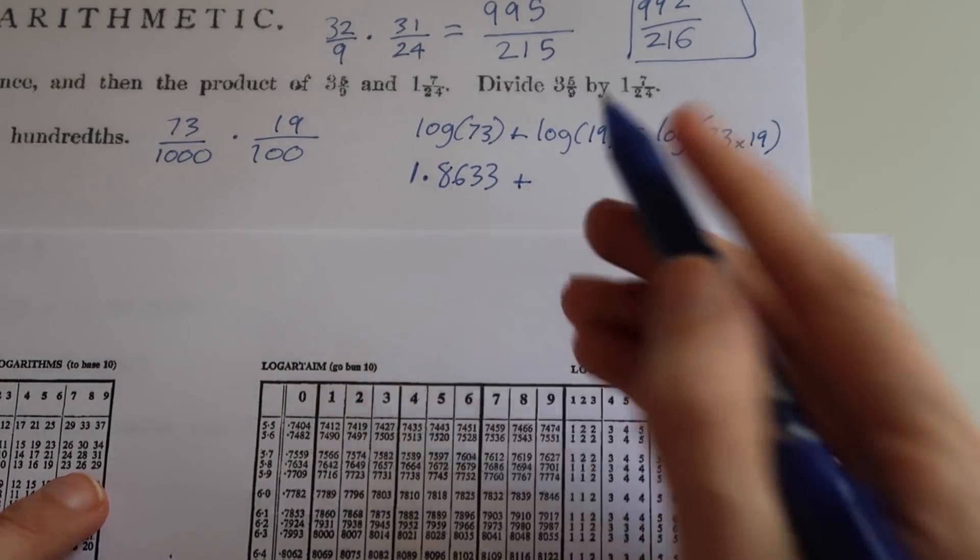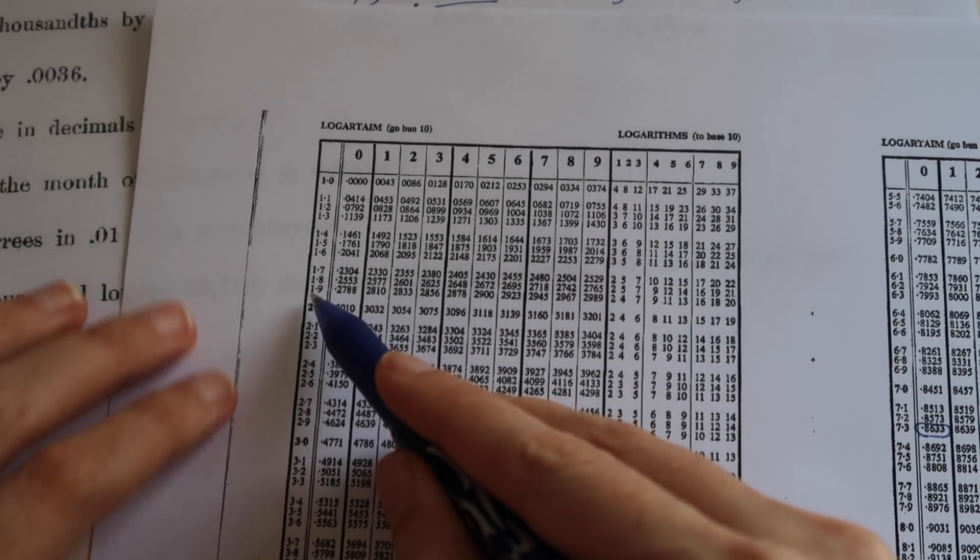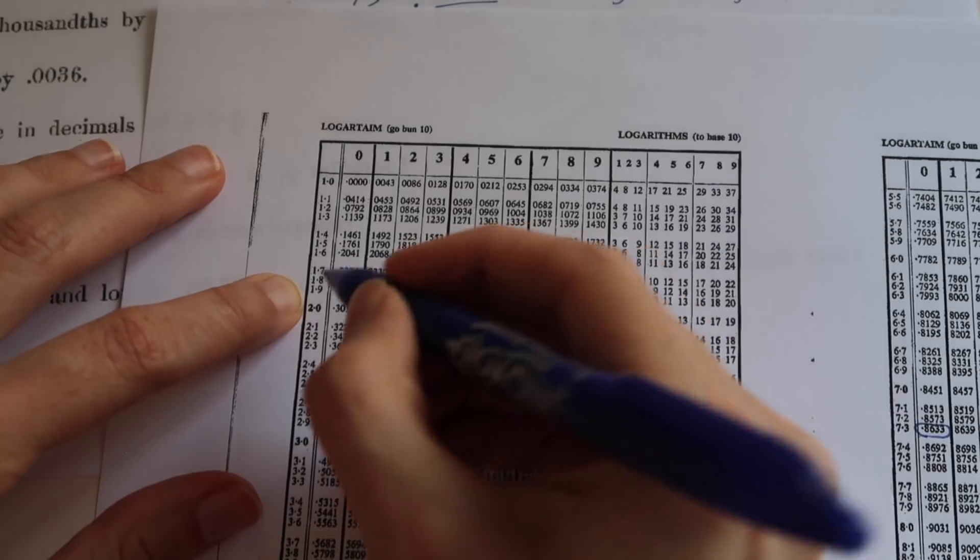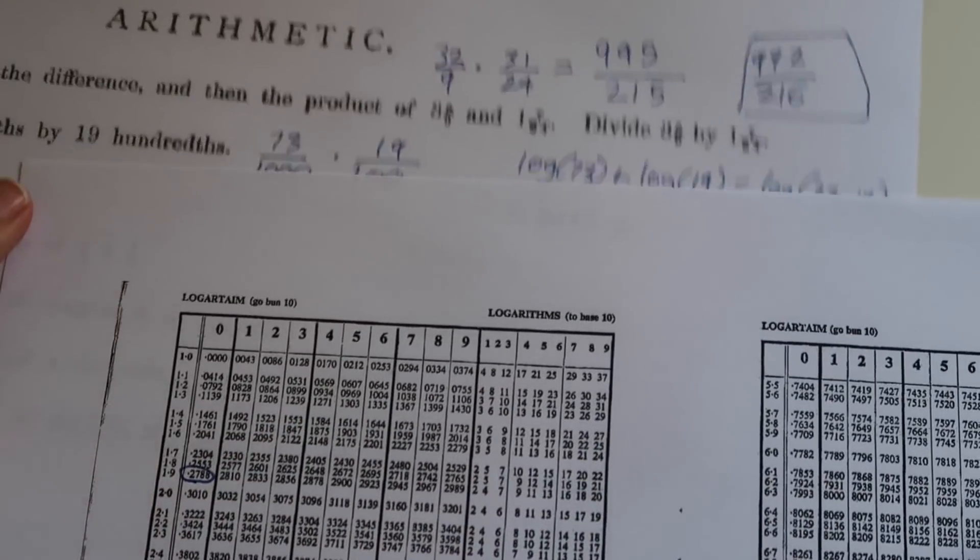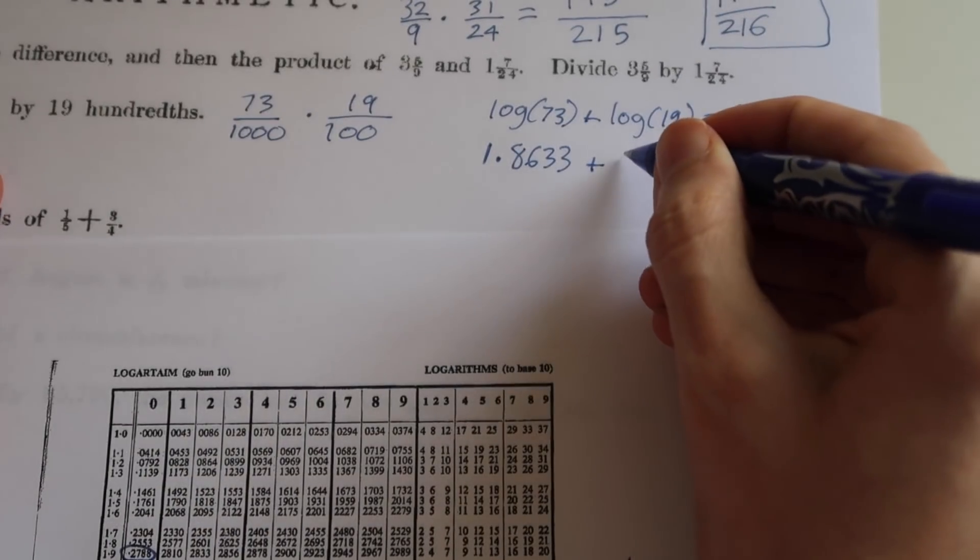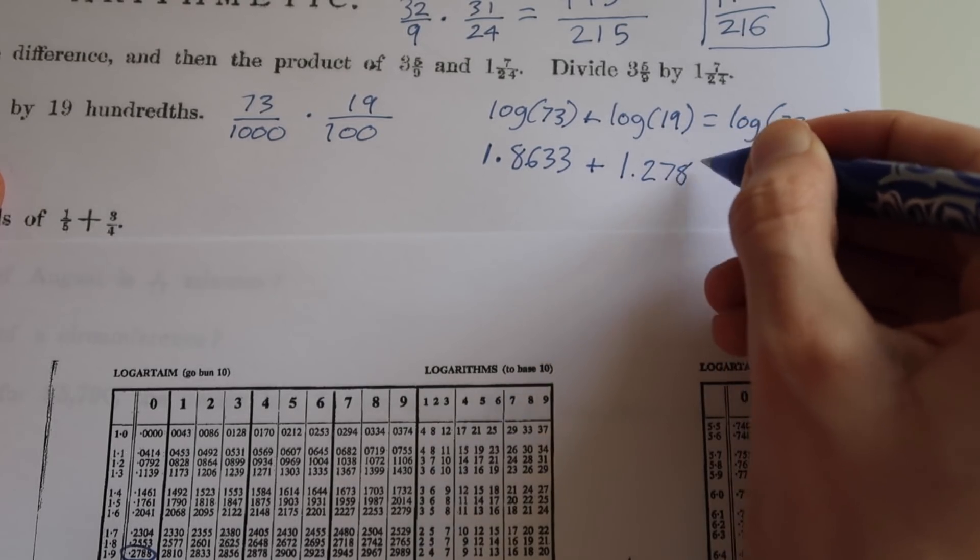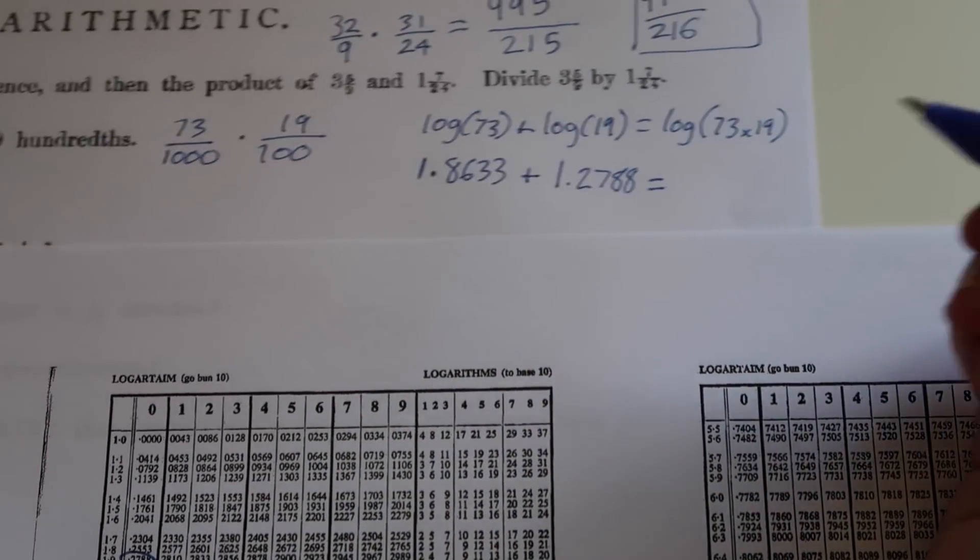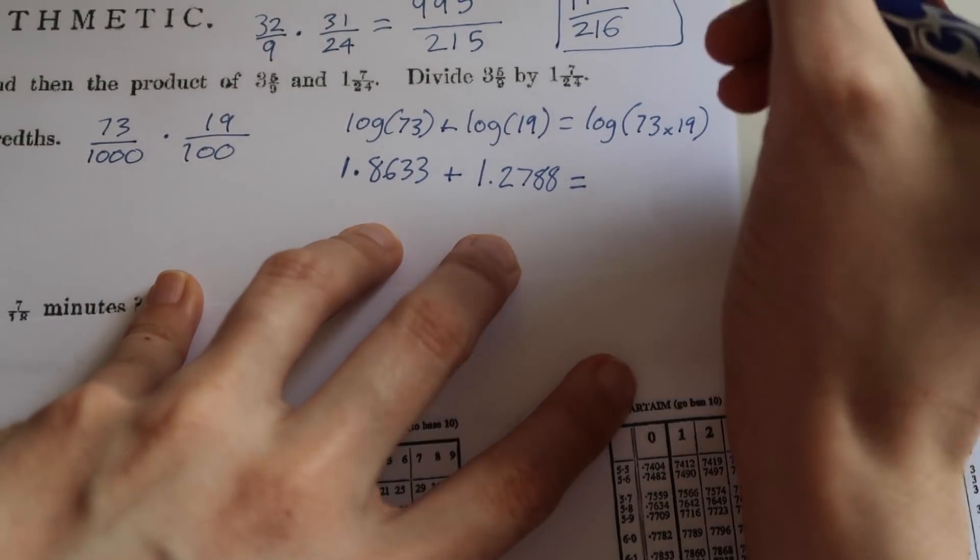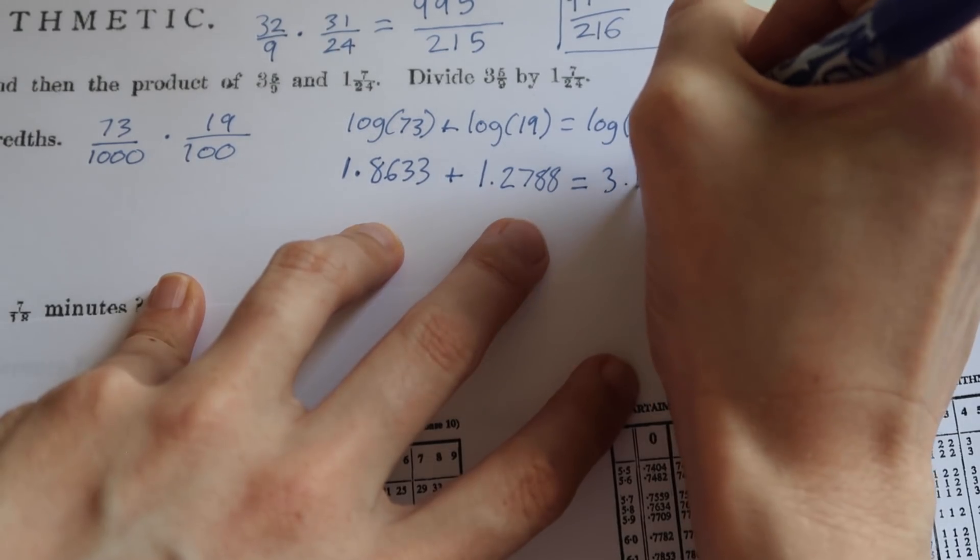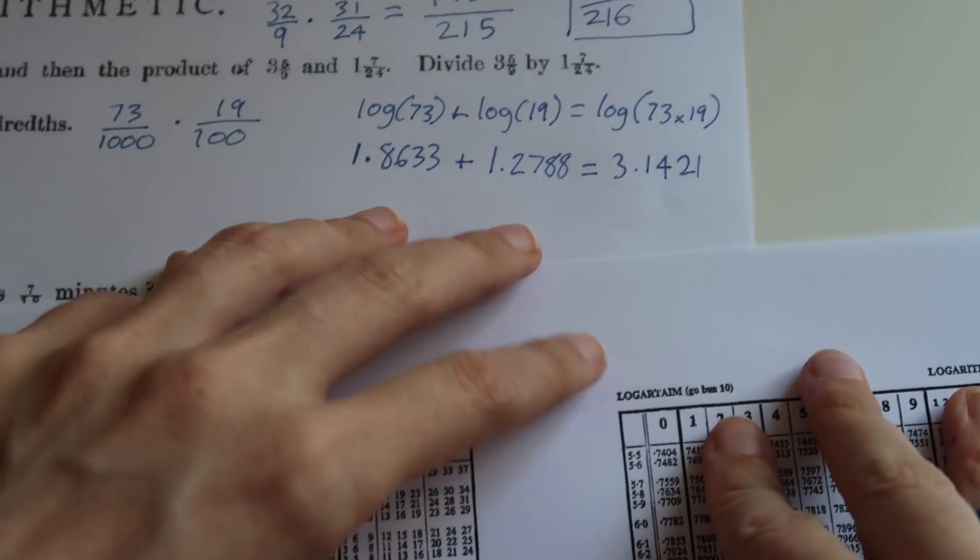And that to the log of 19. Let's go and find 1.9, which will be here. That corresponds to 0.2788. So in a similar way, that will be 1, two significant figures, 0.2788. If we add those together, what we get is 3.1421. That was suspiciously close to pi there for a second.